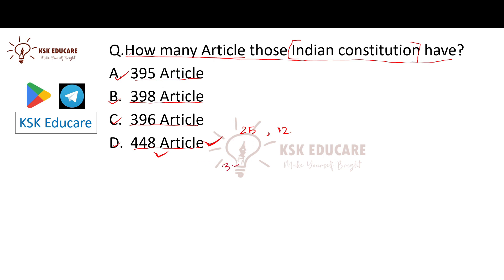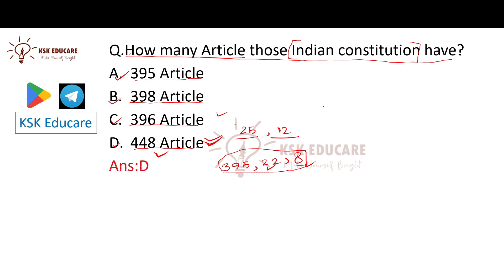So originally there were 395 articles. Over time, through amendments, additional articles were added — such as the 440th article, 25th part, and 12th schedule — bringing the total to 448 articles presently.